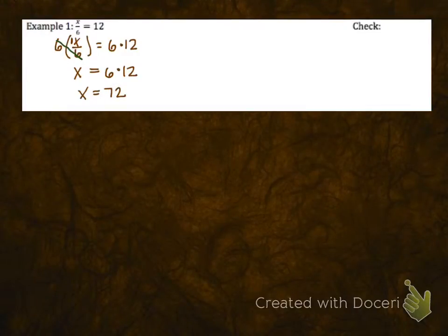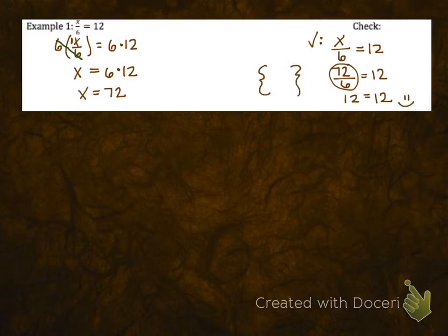Now you do want to always check your work, and to check we write the original equation. Write my original equation, plug in the hopeful solution for the variable, and then you just simplify both sides. There's nothing to do on the right hand side of this equation, but copy down the 12. On the left you would do the division and you get 12. When you get a match, you know you're correct. And then you would list your solution, or your replacement for the variable, 72, in set braces to show the solution.